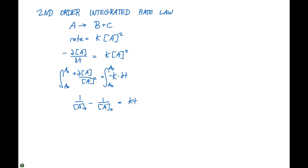So if we rearrange this into Y equals MX plus B form, we have 1 over A at any time T is going to equal KT plus 1 over A naught. And now we have our second order expression in Y equals MX plus B form.